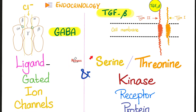What is going on, lovely people? This is Medicosis Perfectionitis, where medicine makes perfect sense. Let's continue our endocrinology playlist - we're talking about cell signal transduction. In the last video, we talked about the G-protein. Today, we'll talk about ligand-gated ion channels such as GABA and how benzodiazepines and barbiturates affect this receptor. We will also talk about serine and threonine kinase receptor protein and the story of TGF-beta, which can lead to fibrosis.